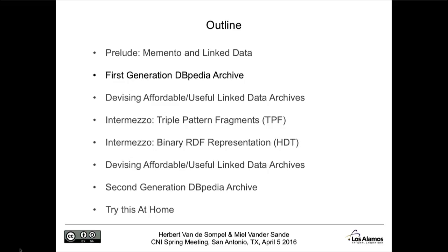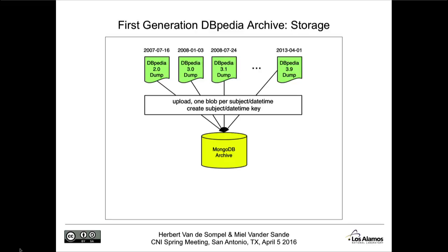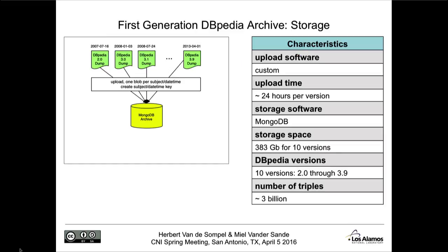The DBpedia dumps are available for download, so you basically download them and upload them into an archive to make it usable. What we did in the first generation is we used MongoDB to store all of that. Basically you have one blob in MongoDB per subject URI — like the city of Paris — and per timestamp, so you have one blob per topic and version going into this one archive. The upload software was custom. When we came to more recent versions of DBpedia, it took about 24 hours to upload a version because the whole index structure had to be recreated. It took about 400 gigabytes to store 10 versions.